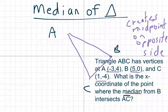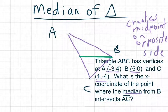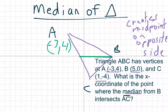And it says the median is drawn from B. So from B I'm going to come over here and draw a line midway. And it helps to label these ordered pairs. And then C is 1, negative 4.